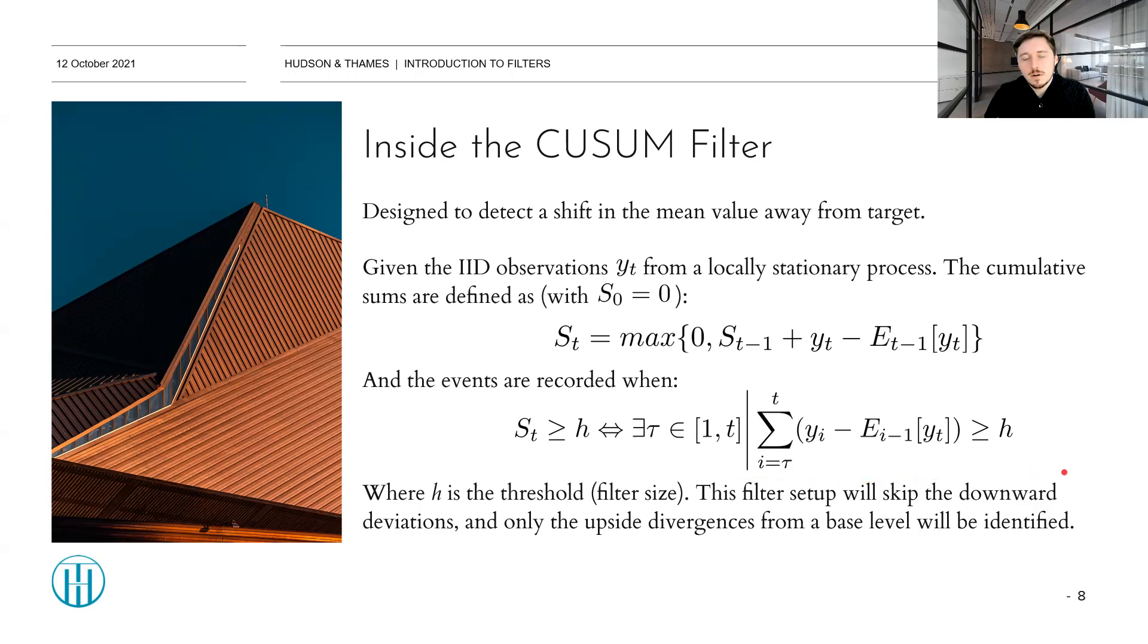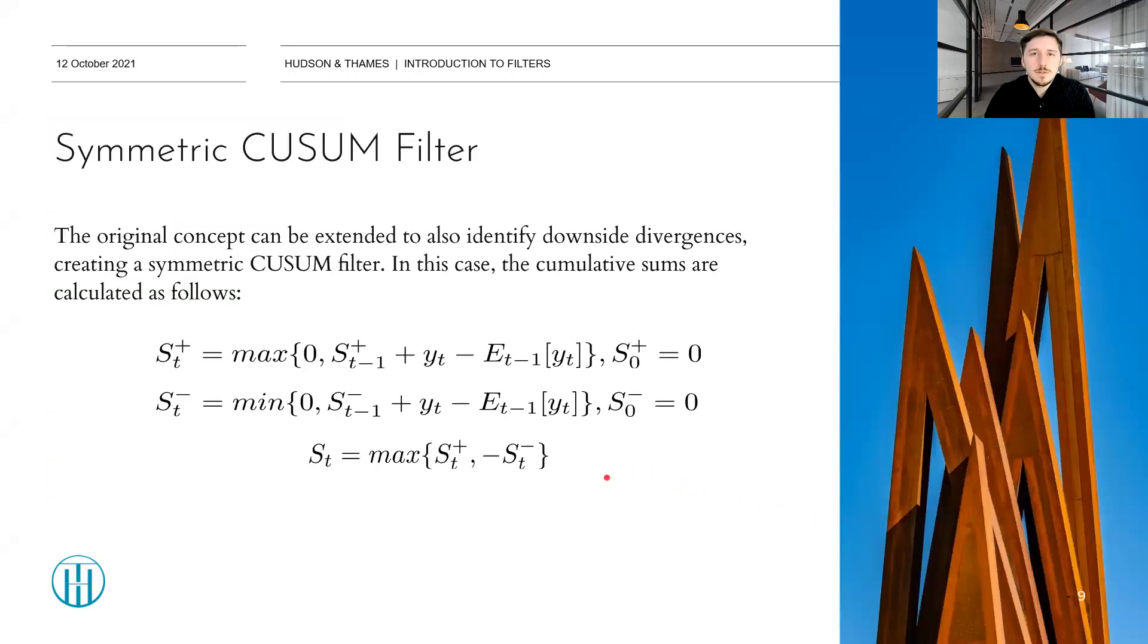The events are then recorded when the set cumulative sum is higher than some value H, where H is the threshold or the filter size, which is equivalent to this formula right here. This particular setting of the CUSUM filter is an asymmetric setting, which means that only the upward divergences from the mean level are detected, but the downward divergences will not be recorded and are neglected.